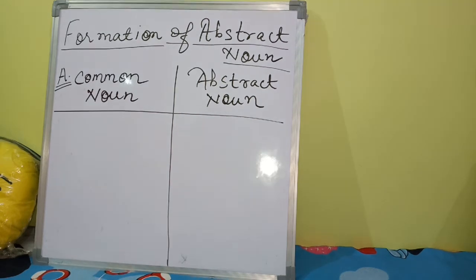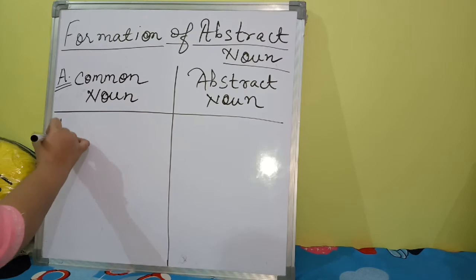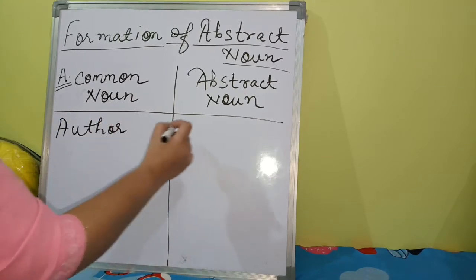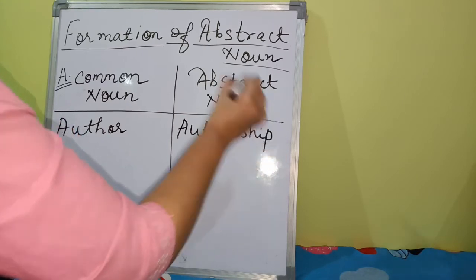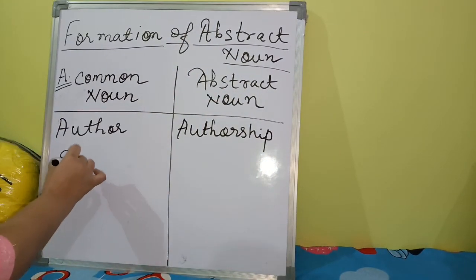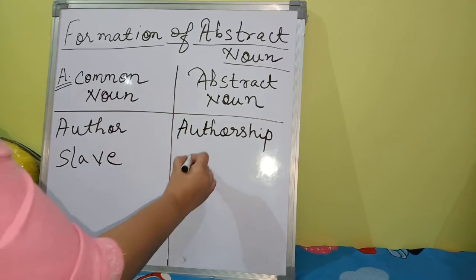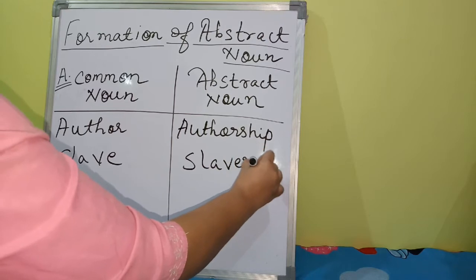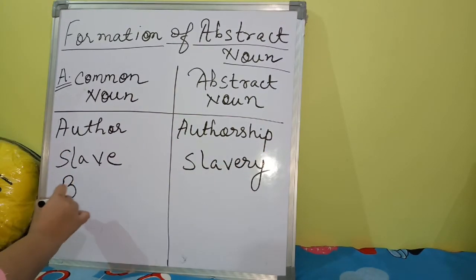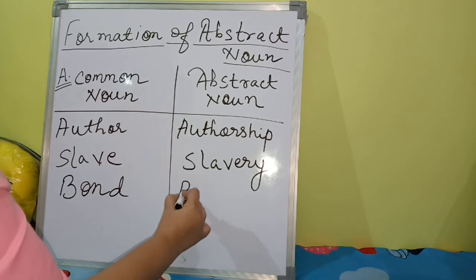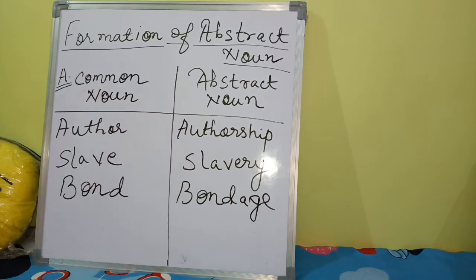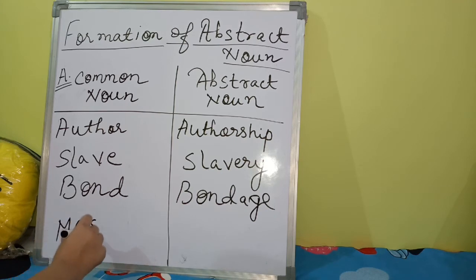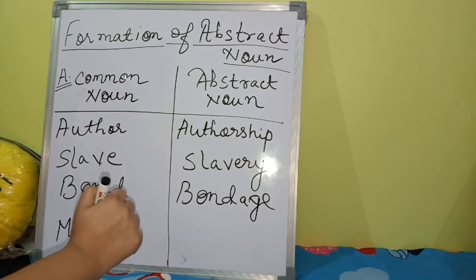More common noun to abstract noun examples: 'author' gives 'authorship,' 'slave' gives 'slavery,' 'bond' gives 'bondage,' and 'master' gives 'mastery.'